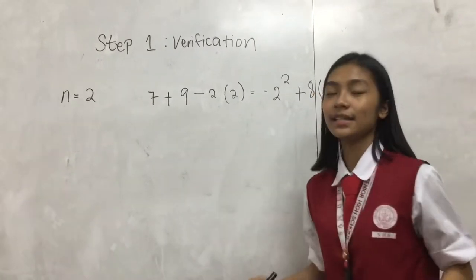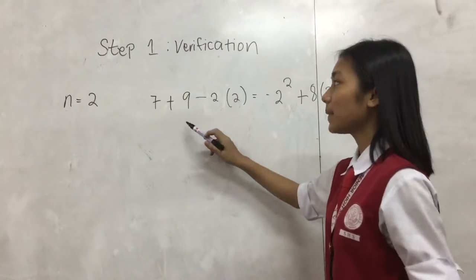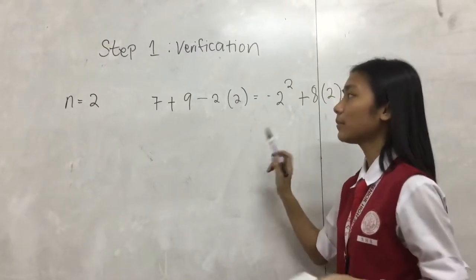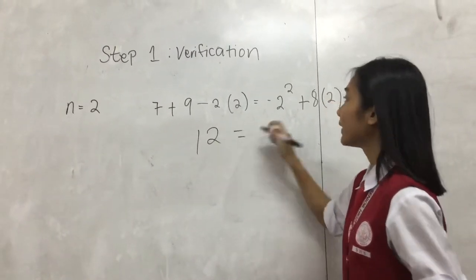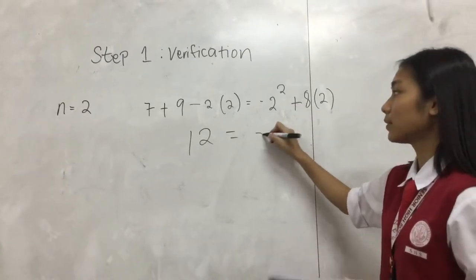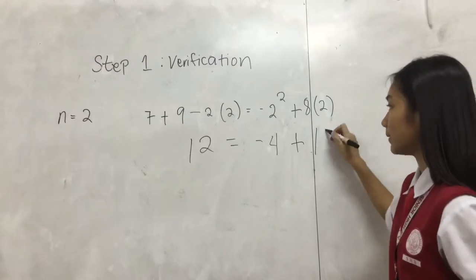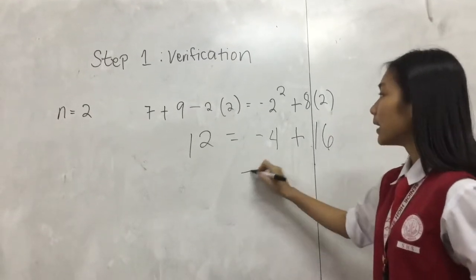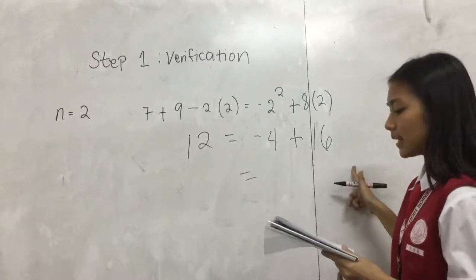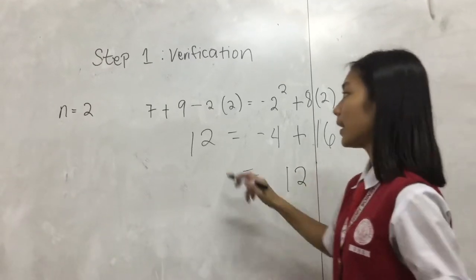When n equals 2, 7 plus 9 minus 2 times 2 equals 12, while negative 2 squared equals negative 4, and 8 times 2 equals 16. Negative 4 plus 16 equals 12.